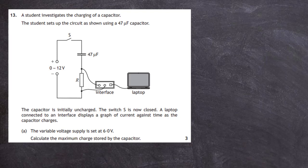Part A: the voltage of the available voltage supply is set at 6 volts and we have to calculate the maximum charge stored on the capacitor. The variable voltage supply is set at 6 volts, and that will be the potential difference across the plates of the capacitor when it's fully charged — that is, when it has its maximum charge. So the voltage across the capacitor at this point is 6 volts.